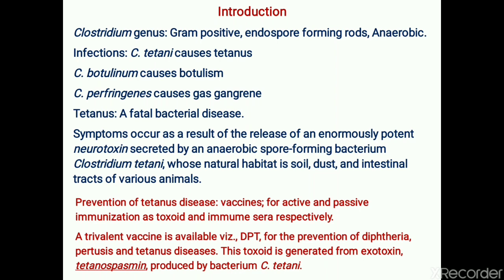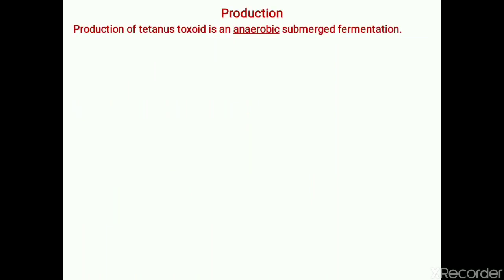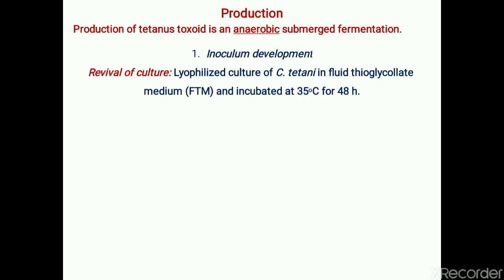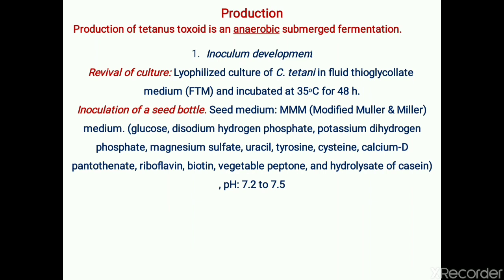The tetanus toxin is generated from an exotoxin called tetanospasmin, which is produced by the pathogen Clostridium tetani. The production method is an anaerobic submerged fermentation process. The first step is inoculum development, in which the lyophilized culture of Clostridium tetani is revived in sterile fluid thioglycolate medium and incubated at 35°C for 48 hours.